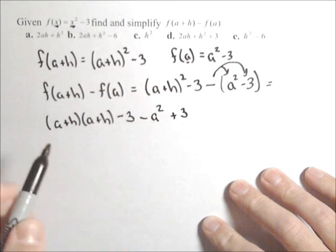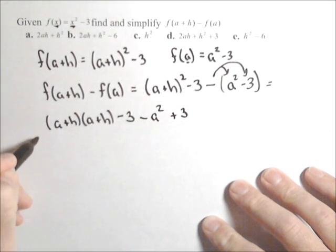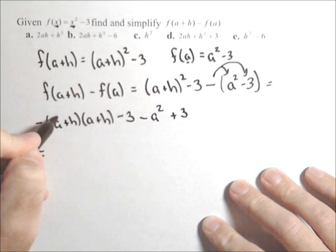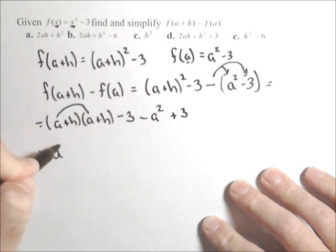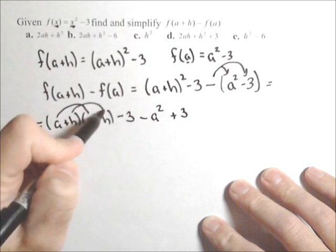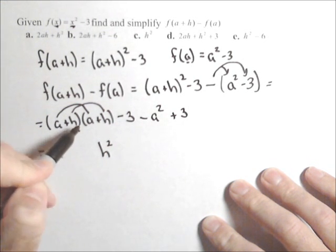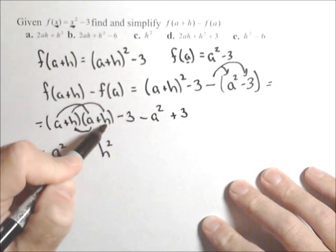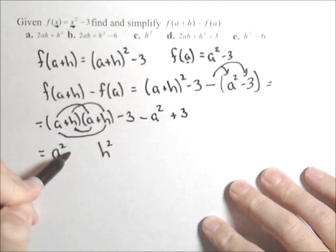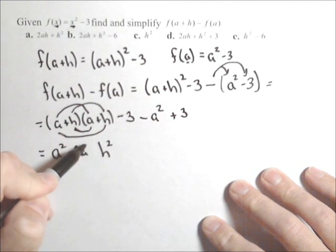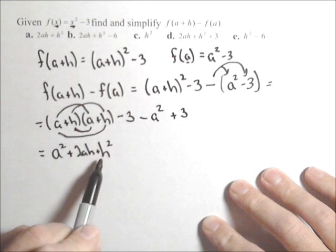You can already see some canceling that's going to happen. a times a is a², h times h is h². On the inside, we have a times h plus another a times h, so plus 2ah. And that was a positive h².